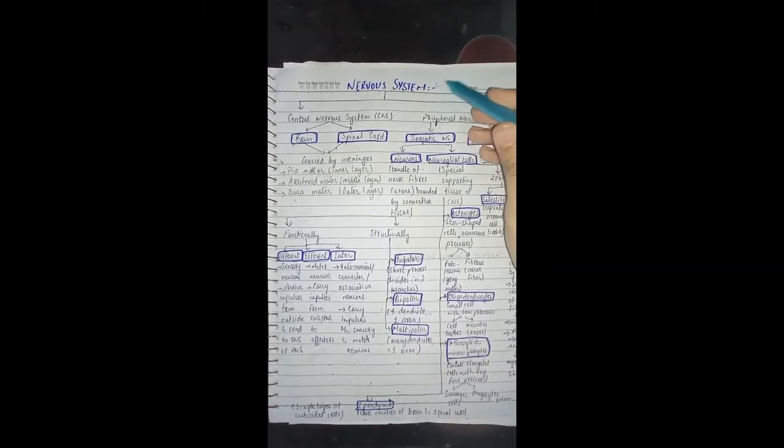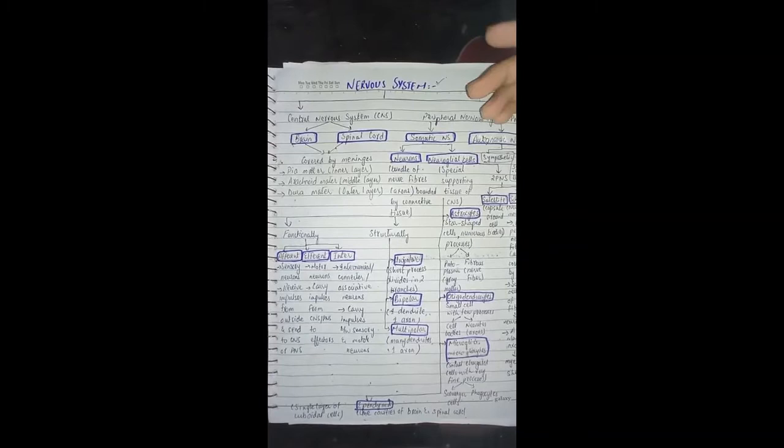As-salamu alaykum. Today we are going to discuss the general anatomy of the nervous system. The nervous system has a very important role in our body. Normal coordination is performed by our body, and the external and internal changes are detected. Responses are generated by the help of our normal body functions.